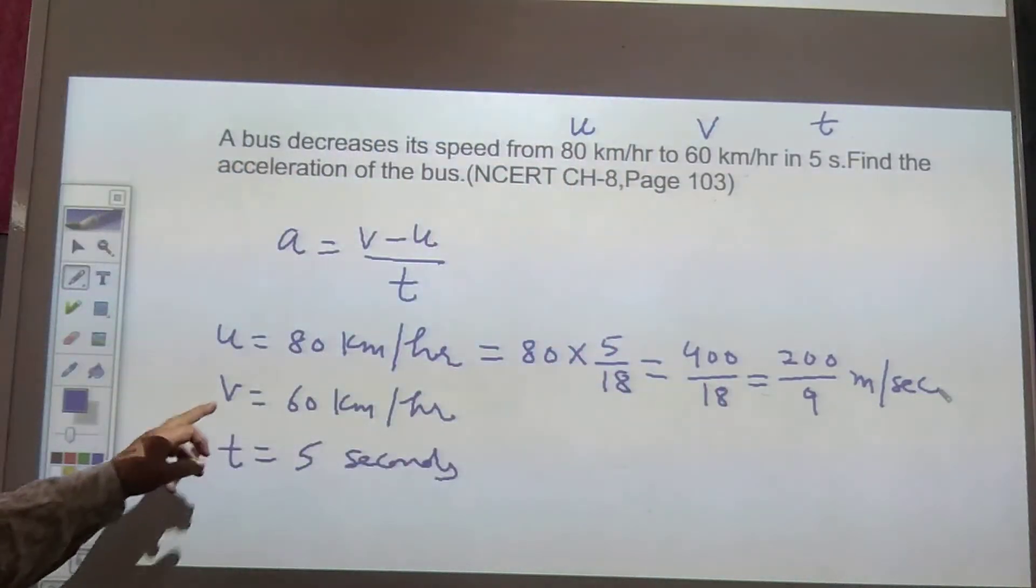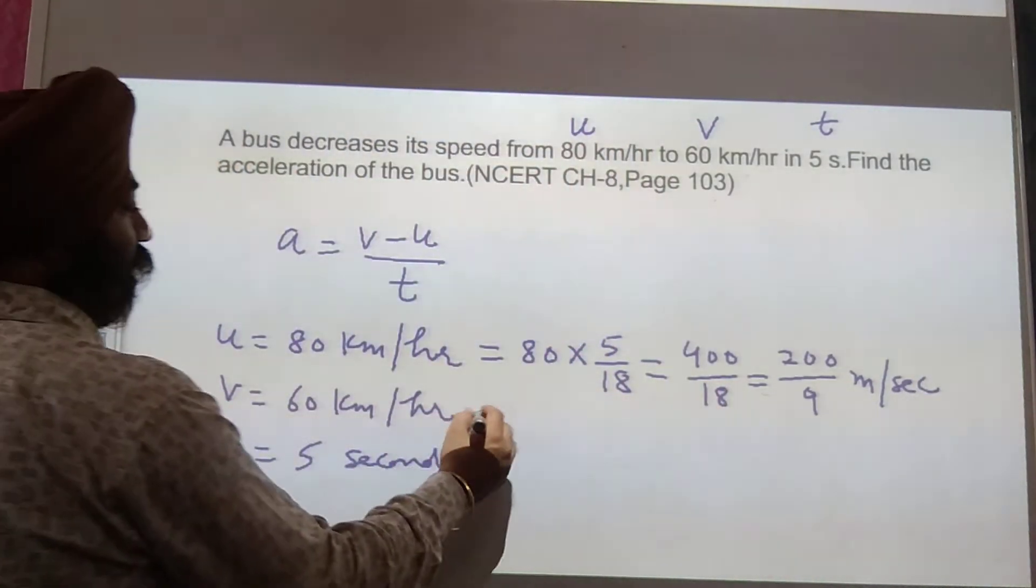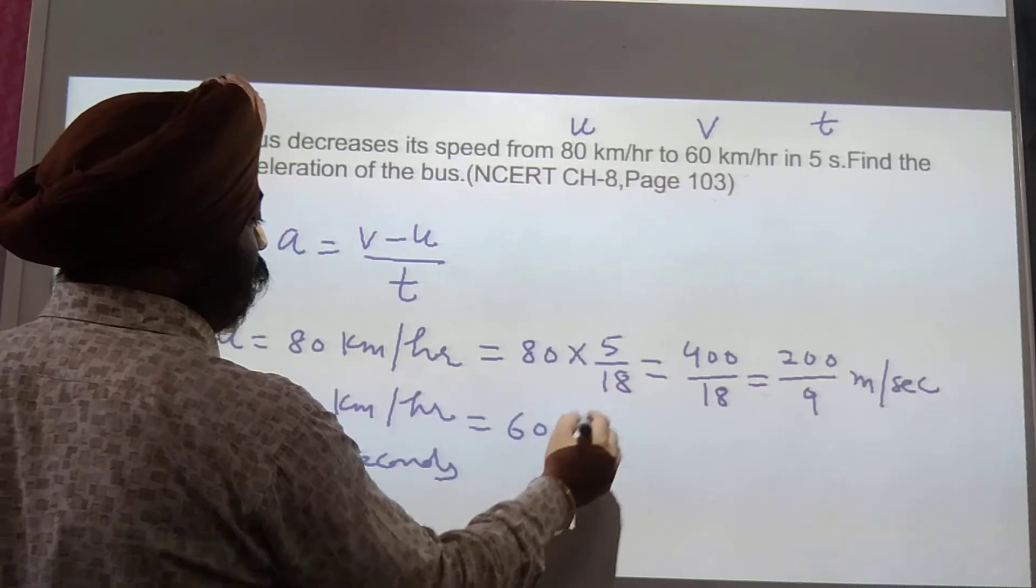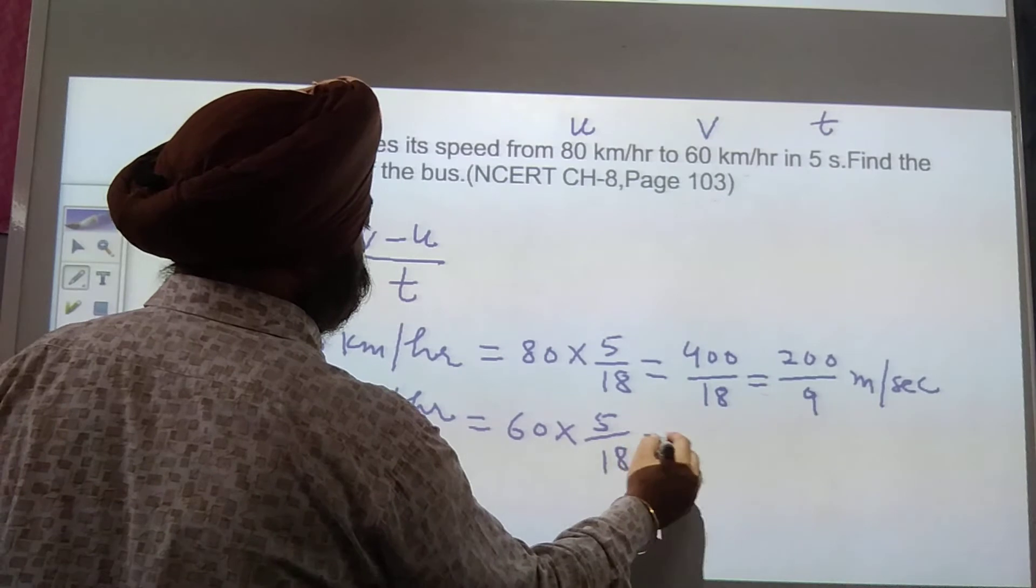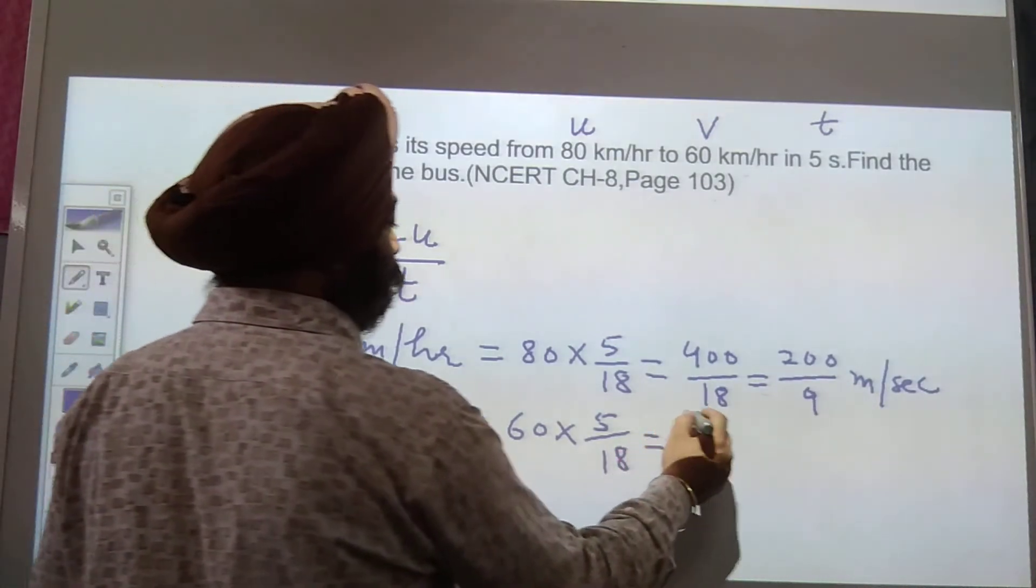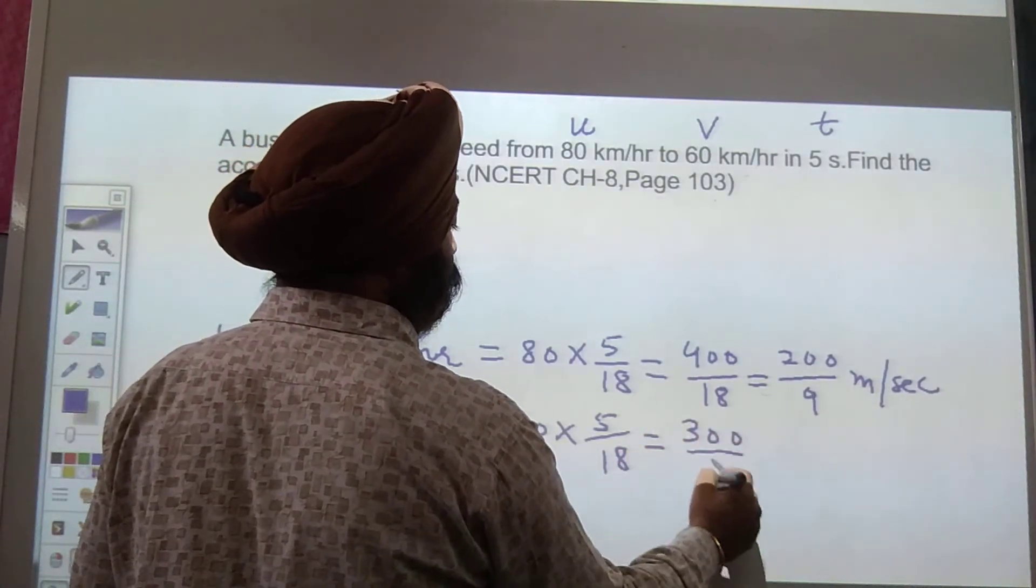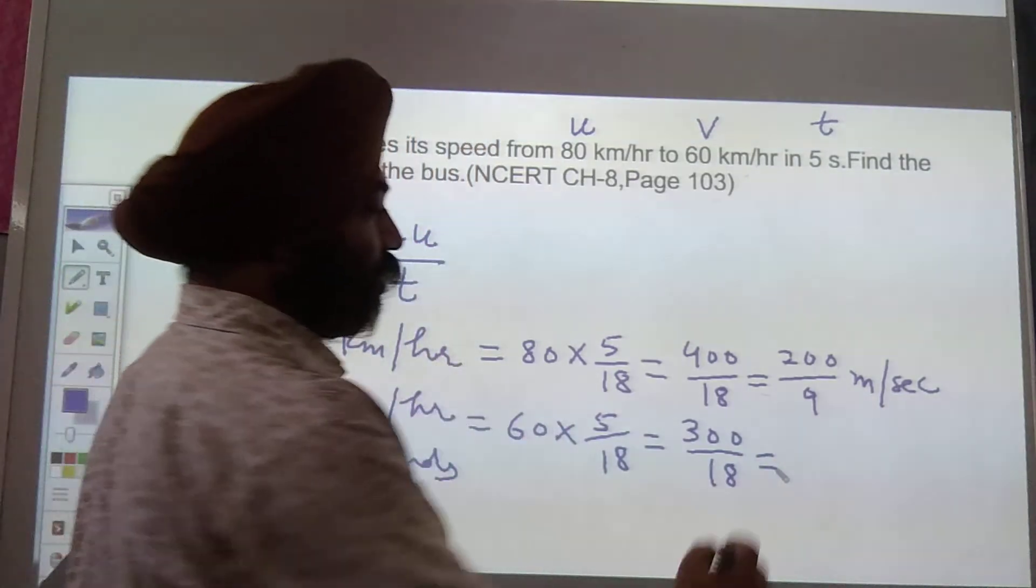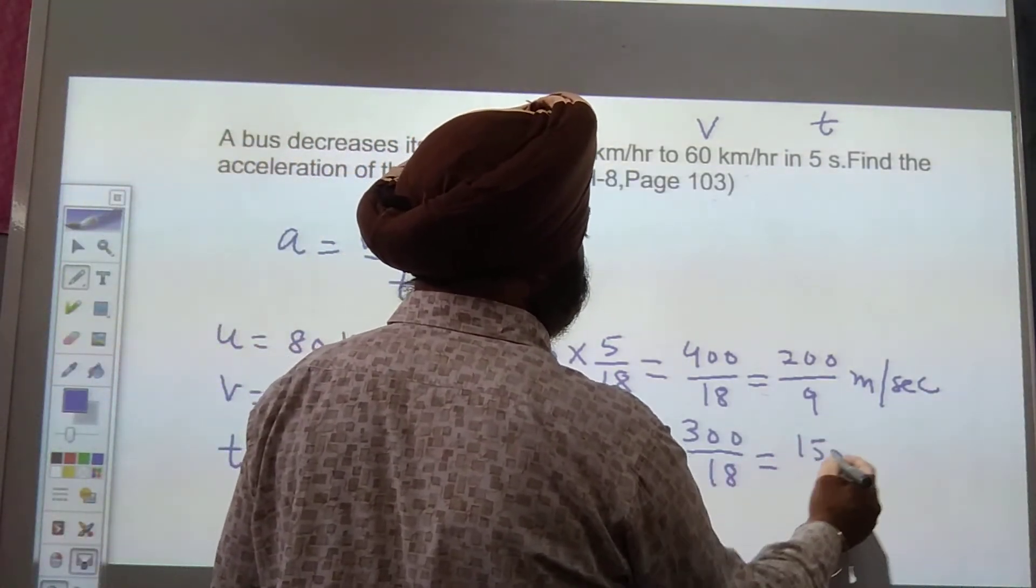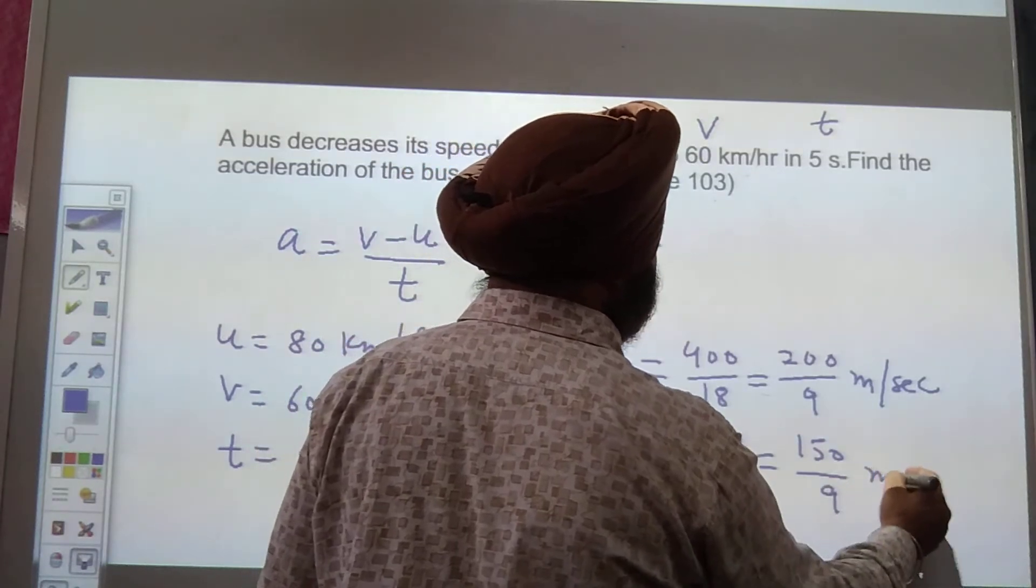Now, final speed is 60 km per hour. Convert this also into m per second. Multiply it by 5 upon 18. So 60 multiplied by 5, we will get 300 upon 18. We can cancel it, so we will get 150 upon 9 meter per second.